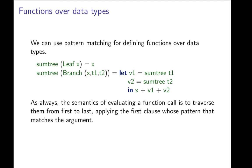If we have a tree, an element of tree, that's a branch labeled x, and with subtrees t1 and t2, then we call sumtree recursively on the subtrees t1 and t2, we get values v1 and v2, and we return the sum of x, this x, and v1 and v2.